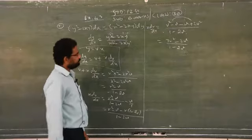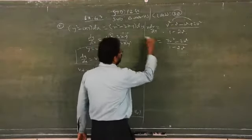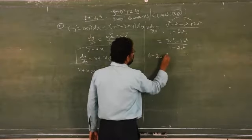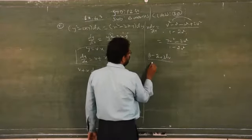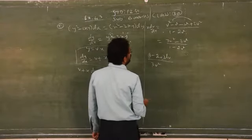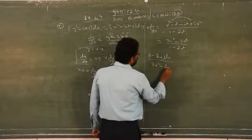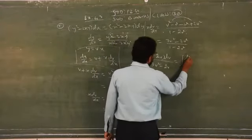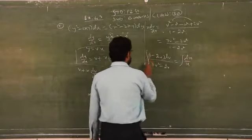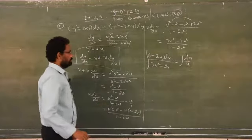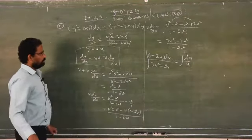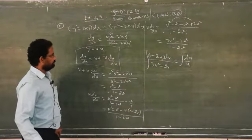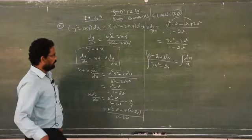Try to simplify. What is the answer? 3v² minus 2v over (1 minus 2v). Now, you group: (1 minus 2v) dv over (3v² minus 2v) is equal to integration of dx/x. Just you have to group like this. Now, you have to check whether it is possible to add and subtract or integrate.